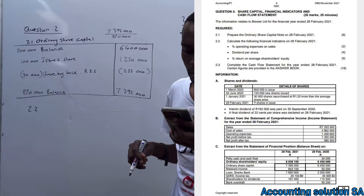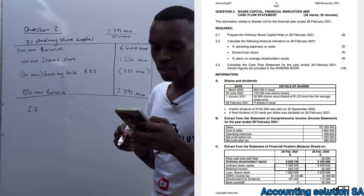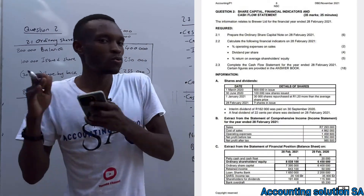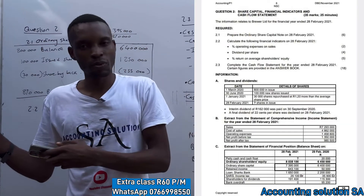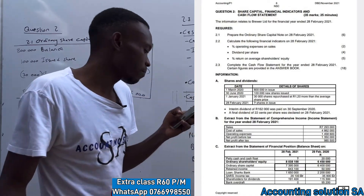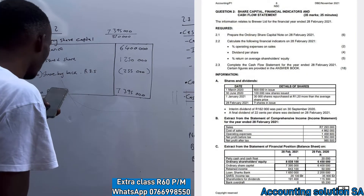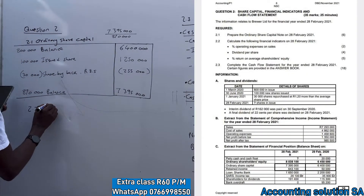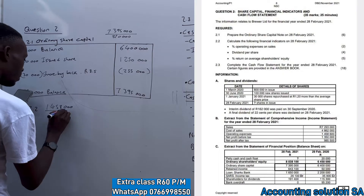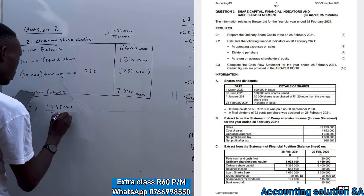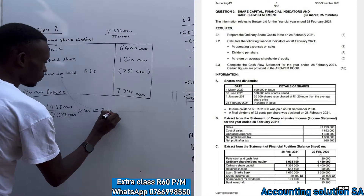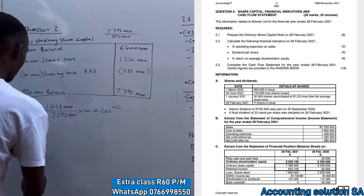Next, calculate the financial indicators on 28 February 2021 — two marks. First, operating expenses on sales is a profitability ratio: whatever on whatever means whatever divided by whatever, multiplied by 100. Operating expenses of R1,458,000 divided by sales of R7,293,000 multiplied by 100 gives us 20%. That's all for this one.